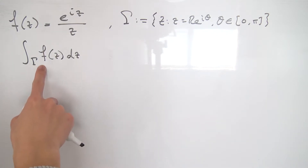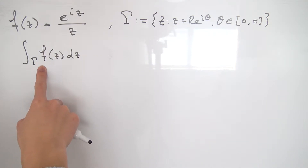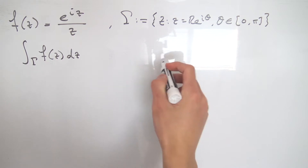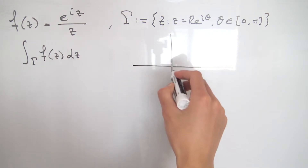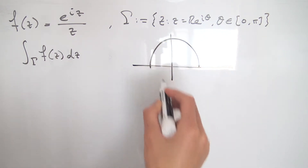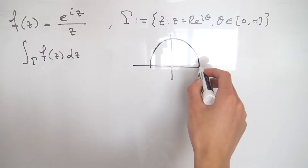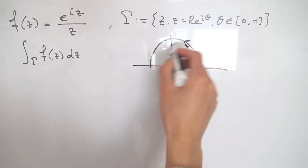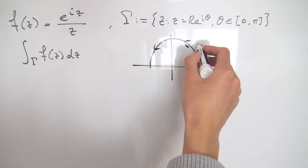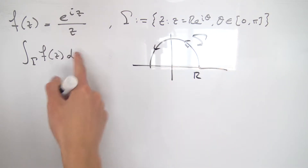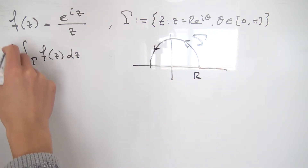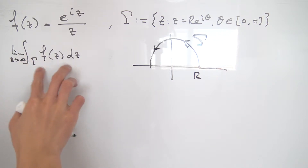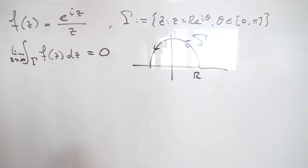What we wanted to do was calculate the integral over gamma of f of z dz, where gamma is defined to be a semicircular arc of radius r in the upper half of the complex plane — just this path right here. We wanted to show that if we take the limit as r approaches infinity, this integral vanishes to zero.